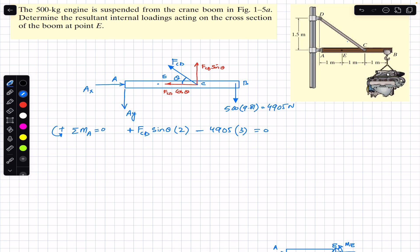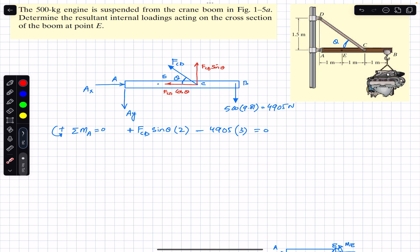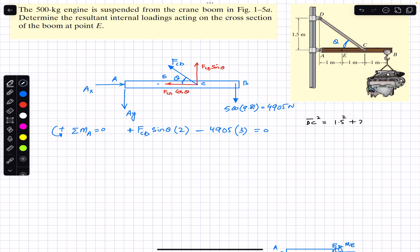We need to find angle theta from the given dimensions: the horizontal distance is 2 meters and the vertical distance is 1.5 meters. Applying the Pythagorean theorem, DC² equals AD² plus AC², which is 1.5² plus 2². Taking the square root, the DC member length comes out to be 2.5 meters.